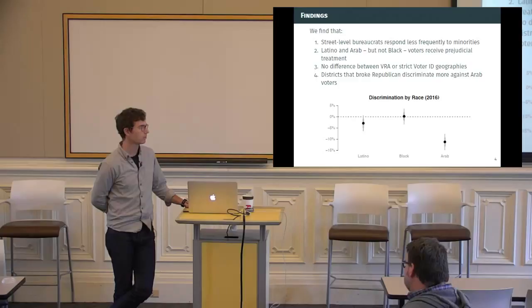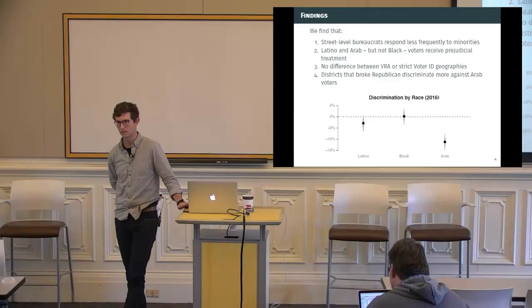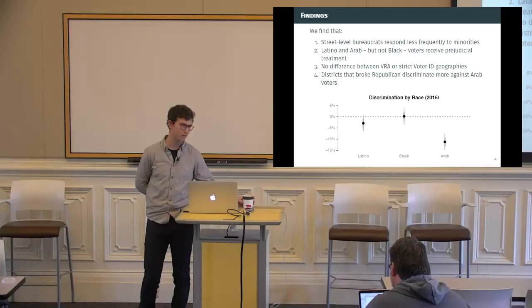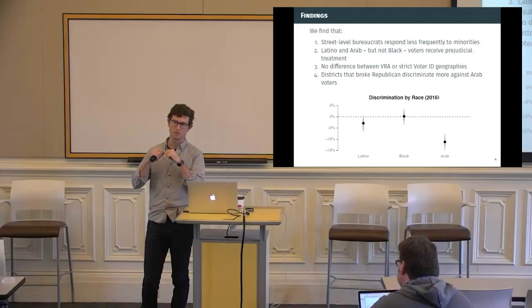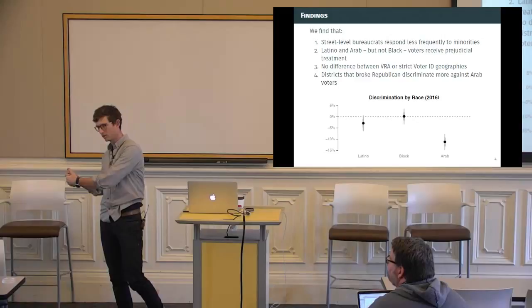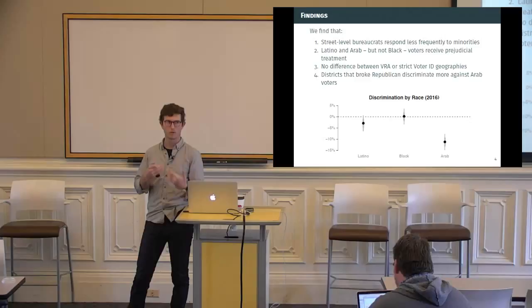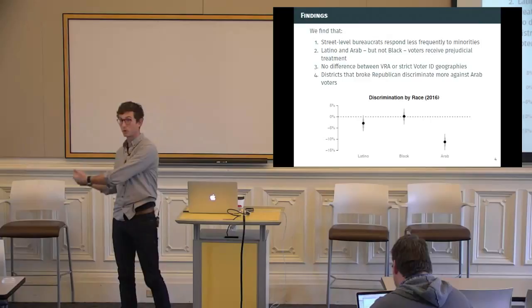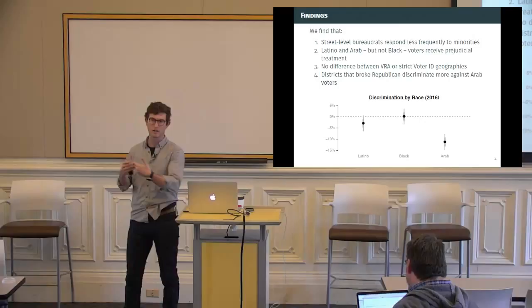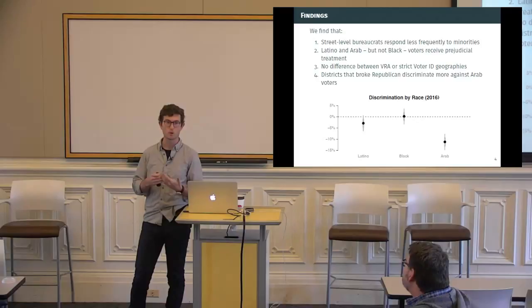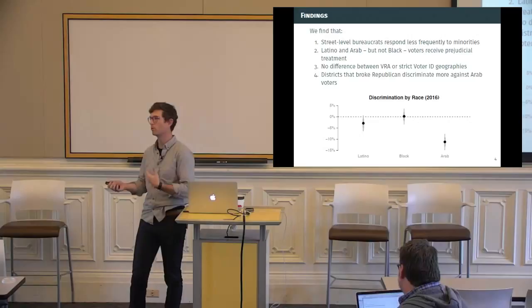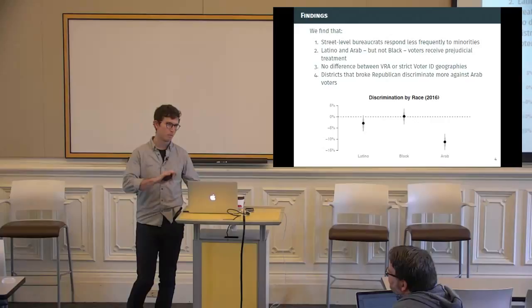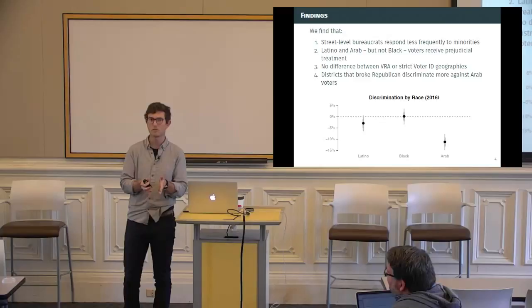And then the fourth of these that we find is that districts that broke Republican in the 2016 election are much more discriminatory against Arab voters than against other voters. Now, the difference between the study we're performing here and several past studies is that we're exogenously varying the names of the people who are sending these requests. For example, the King 2010 study looked at majority-minority precincts versus mostly white precincts, but those weren't randomly assigned. It may be that there's just less resource available and so they could not allocate as much. So the discriminatory behavior could actually be discriminatory or it could just be unlucky. It could be a resource allocation problem. Because of the way that we've set this up, we're able to make really clear claims that it is discriminatory practices or bias practices rather than some other feature.